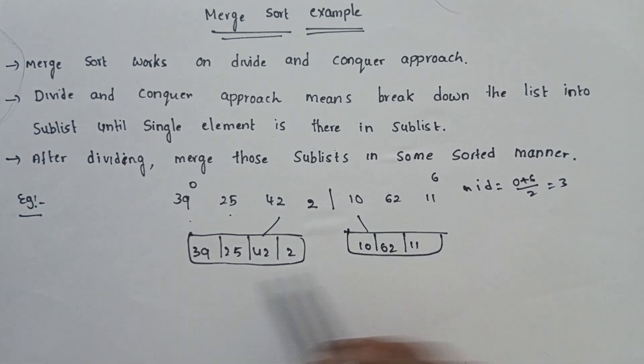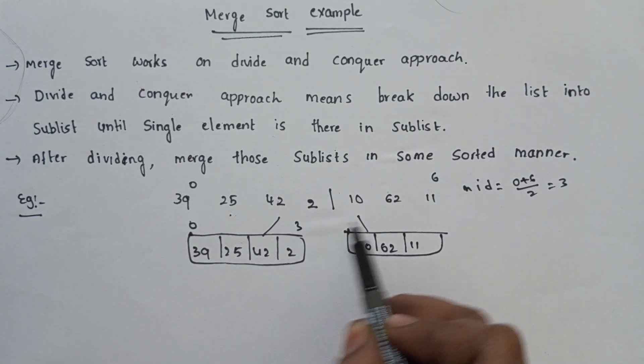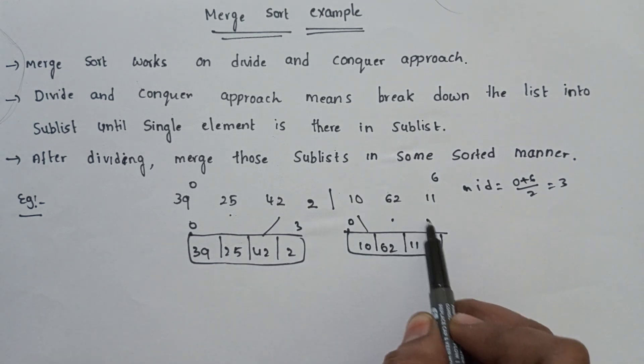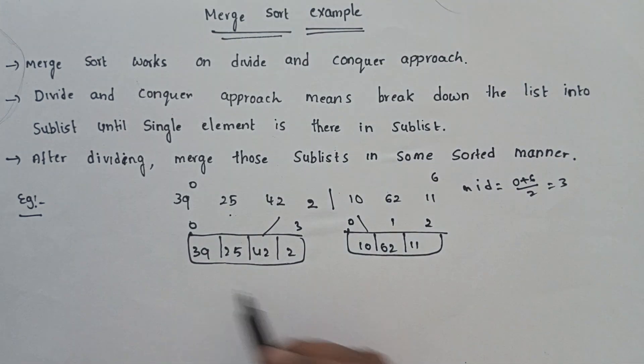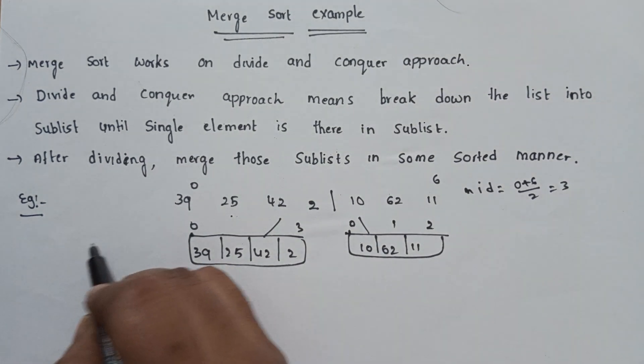So again, this sublist is divided into 2. Index is 0, 1, 2, 3 and index 0, 1, 2. Again, we divide this sublist.